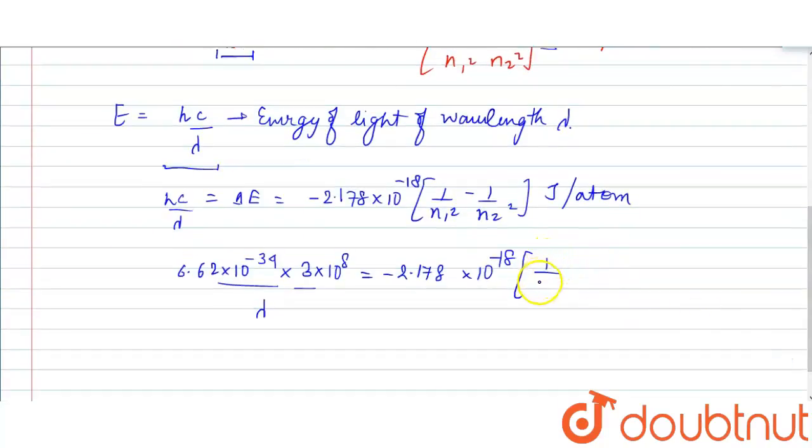Therefore, n1 equals 1 minus 1 by 2 squared. This becomes 6.62 times 10 to the minus 34 times 3 times 10 to the 8 divided by lambda equals minus 2.178 times 10 to the minus 18 times 3 by 4, as this would be 1 minus 1 by 4, which equals 3 by 4.